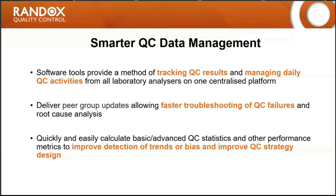On top of that, and unlike any LIMS or LIS, it will also deliver peer group updates. Stephen already touched on the importance of peer data in facilitating faster troubleshooting and identification of QC failures, and also helping with root cause analysis — so you can quite quickly see if an error is unique to your laboratory or if it's something other labs using the same QC and the same instrument are already seeing. And finally, it will quickly and easily calculate not only your basic QC statistics such as standard deviation and CV, but also some more advanced metrics, which will help to improve detection of any trends or bias and may improve your QC strategy design as well.